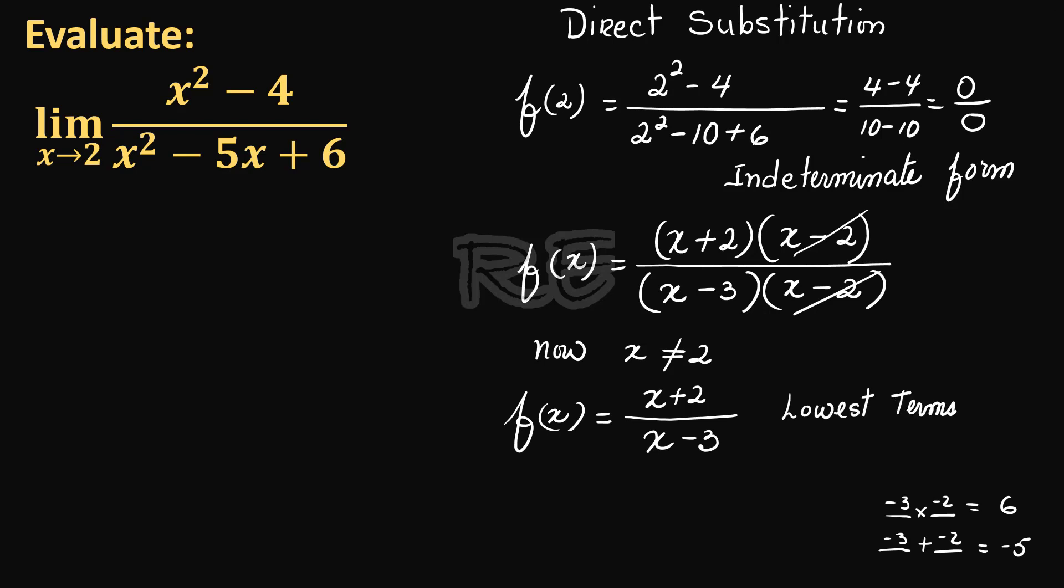This is the rational expression we're going to use to calculate the limit because this is what should be used for any value that's different from 2. As x approaches 2, the limit of x plus 2 over x minus 3 can be calculated by direct substitution. 2 plus 2 divided by 2 minus 3 is 4 over negative 1. So the limit we're looking for is equal to negative 4.